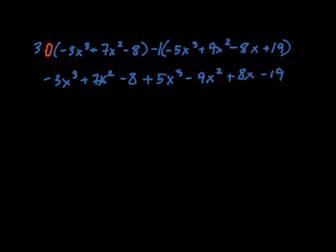Now let's go ahead and combine like terms. We have a negative 3x to the third and a plus 5x to the third. That is 2x to the third. And then we have a plus 7x squared and a negative 9x squared. When we add the coefficients, we get negative 2x squared.